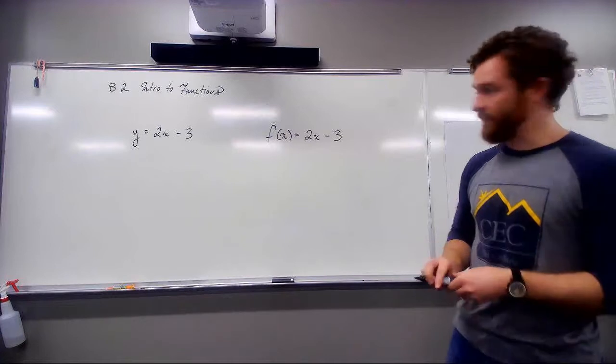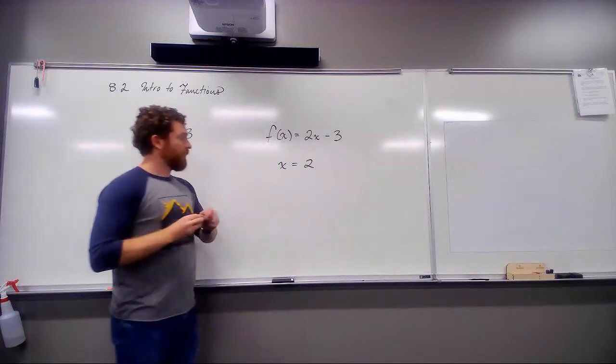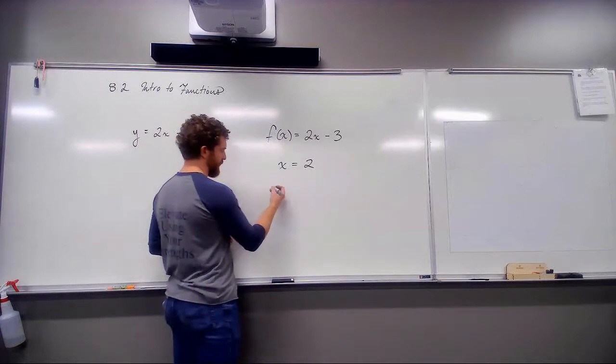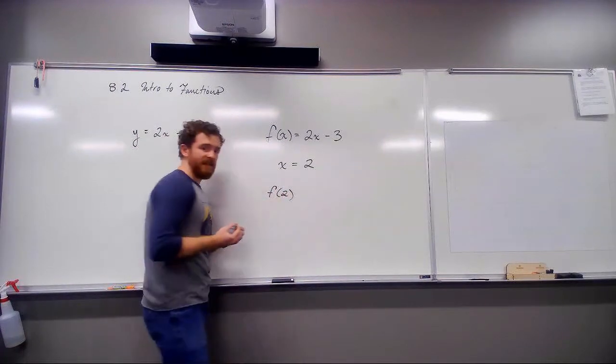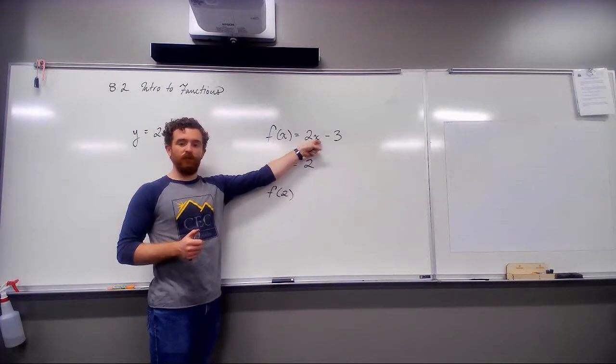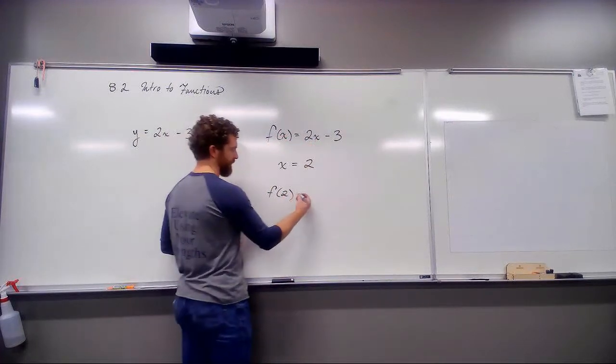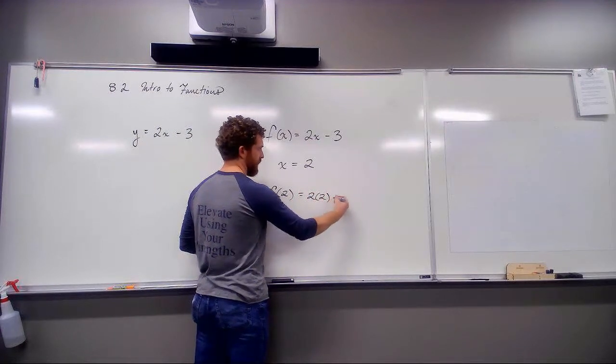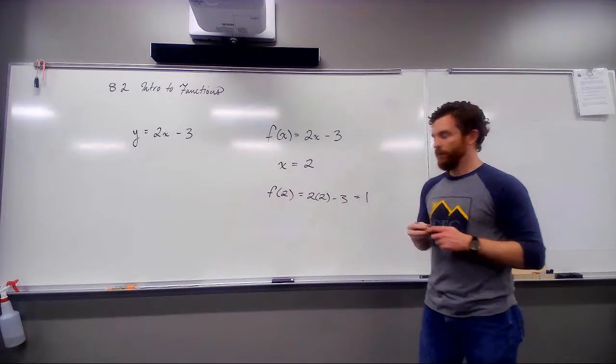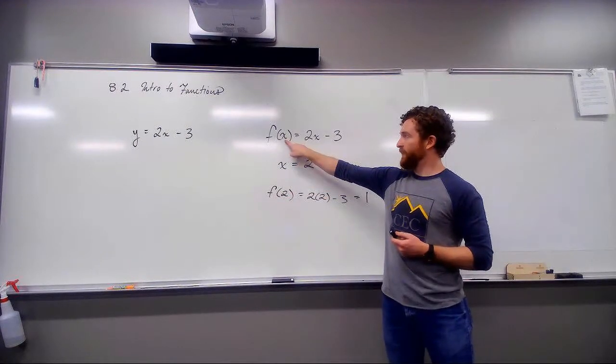So, if I evaluate this function at x equal to 2. Well, we said that this is f of x, f, the function evaluated with the input x. So, I can rewrite this and say, what is my function, f, evaluating at two? And as wild as that might sound, it's really just a matter of replacing this x with a 2. I replace this x with a 2. And now I can solve it. So, that means 4 minus 3 is 1. So, my function evaluated at the input 2 is 1.